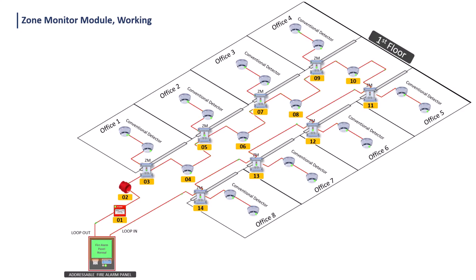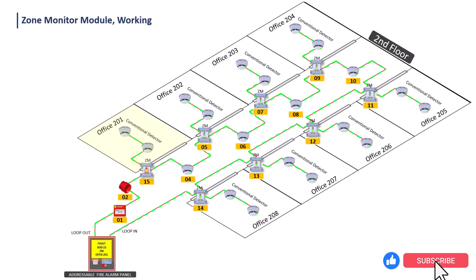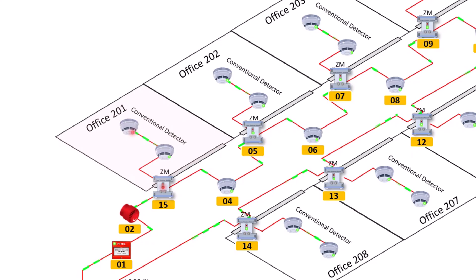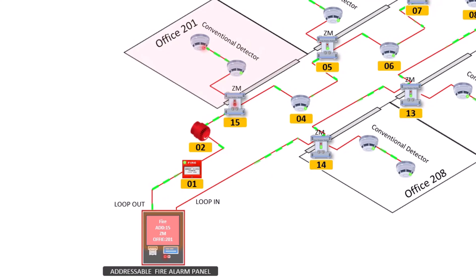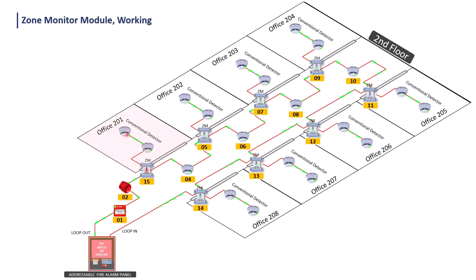The zone monitor module works like a one-zone conventional panel. When there's a fault in the conventional detector or cable — such as an open or short circuit — the zone monitor module reports it with the address to the addressable fire alarm panel. When a fire event occurs, the conventional detector sends the fire signal to the zone monitor module, which then sends the fire signal with the address to the panel. For example, if a fire is detected in office number 201, the panel will show address 15 zone monitor module and office number 201 fire. However, it won't be known which specific detector in office 201 triggered the fire, because it's a conventional system.